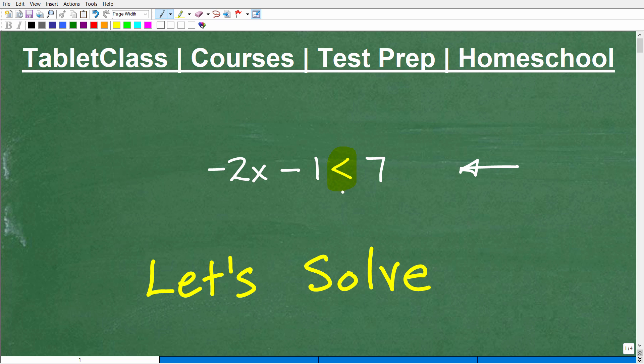Okay, so we want to solve this inequality, and then we want to graph the solution. Now let's just quickly review the concept of basic inequality. So what if I have this? How do I say this right here? This is x, but what symbol is that? Is this the less than, or is it the greater than? Is it the less than equal to? Is it greater than equal to?